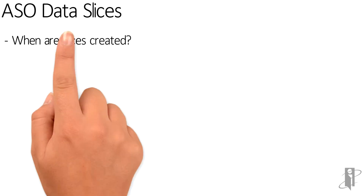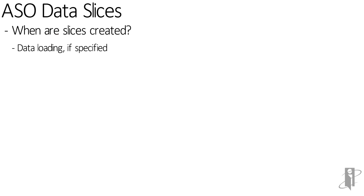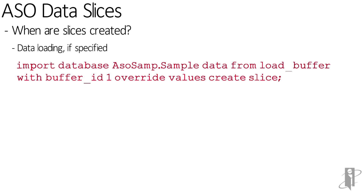So when is a slice created? Well, on a data load, if specified. Here's an example of a MaxL script: import database ASO_SAMP from load buffer with buffer ID 1, override values, create slice.